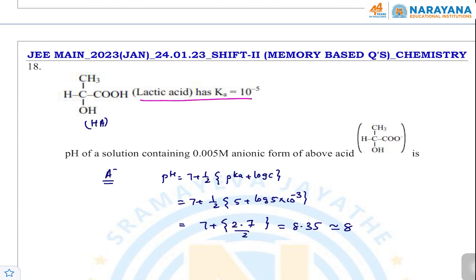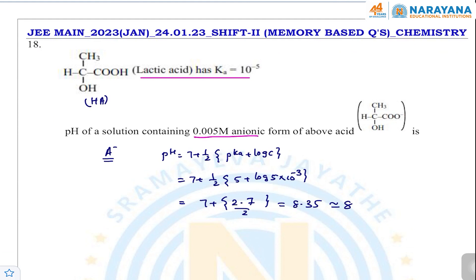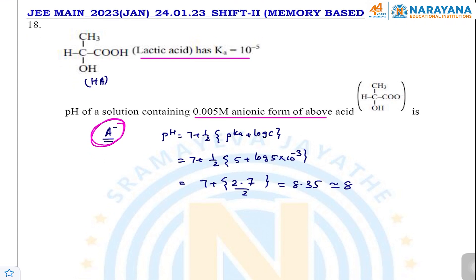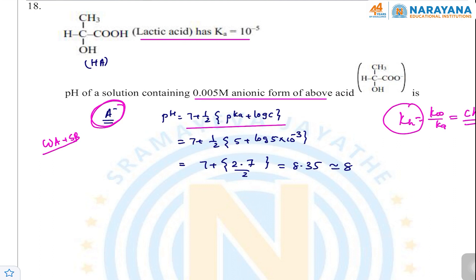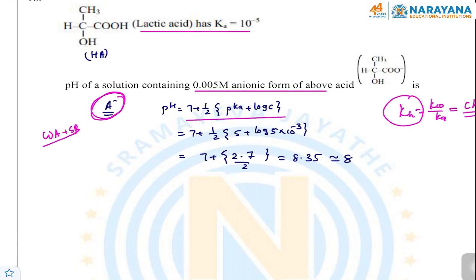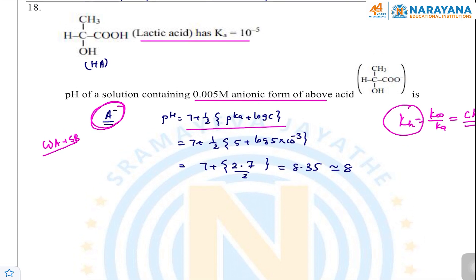The next question: lactic acid is given and the pH of the lactic acid salt (anionic form) is asked. The salt of weak acid (lactic acid) and strong base (like NaOH) gives a solution with pH > 7. Using the formula: pH = 7 + ½(pKa + log C). pKa = 5; substituting the values gives pH ≈ 8.35, which should be approximated to the nearest answer.